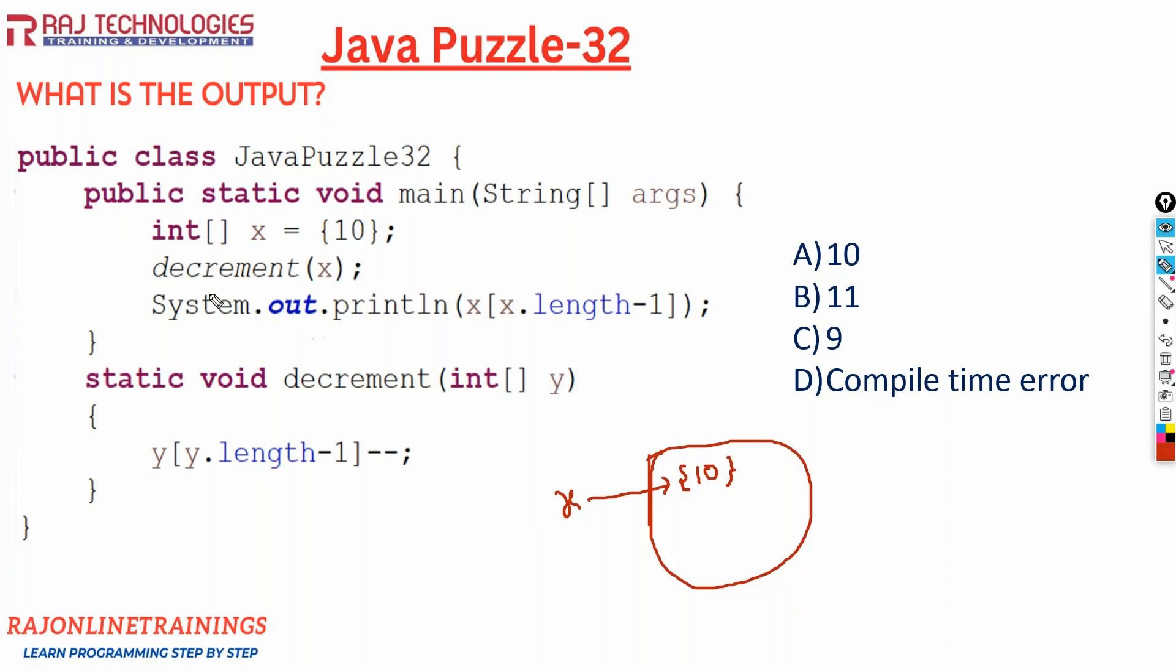Now this x array, we are giving to the method decrement. This x array will come and store into y. So y is also referring to the same memory, this 10. Since arrays are reference type in Java, this will be the reference memory allocated in heap memory and x and y will be referring to this array with a value 10. When you pass this x array to y, y also refers to the same memory where this array is present.